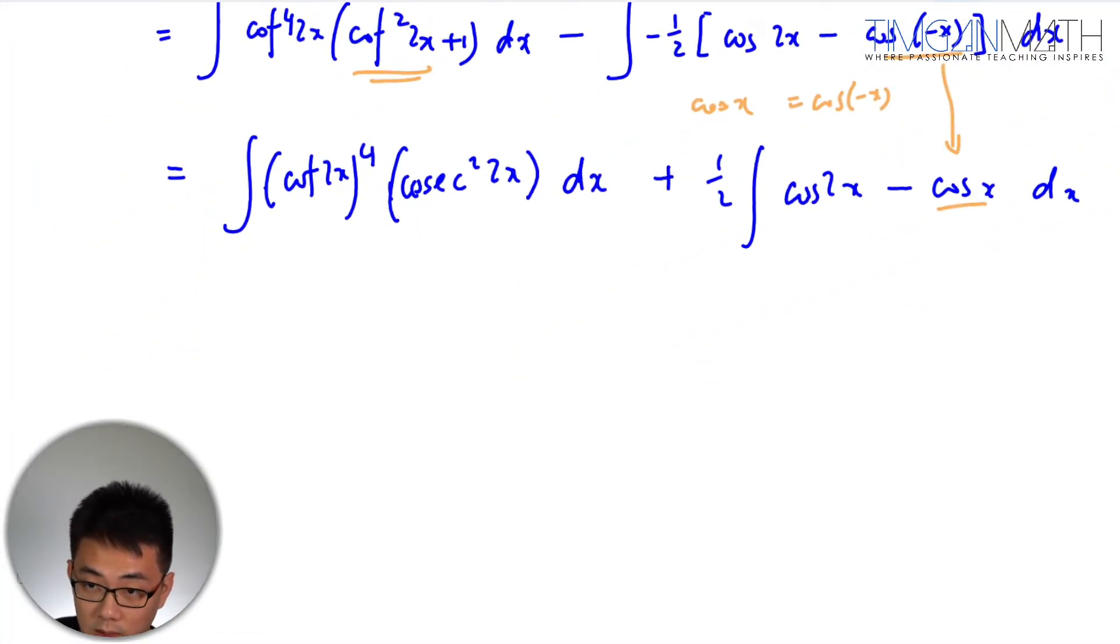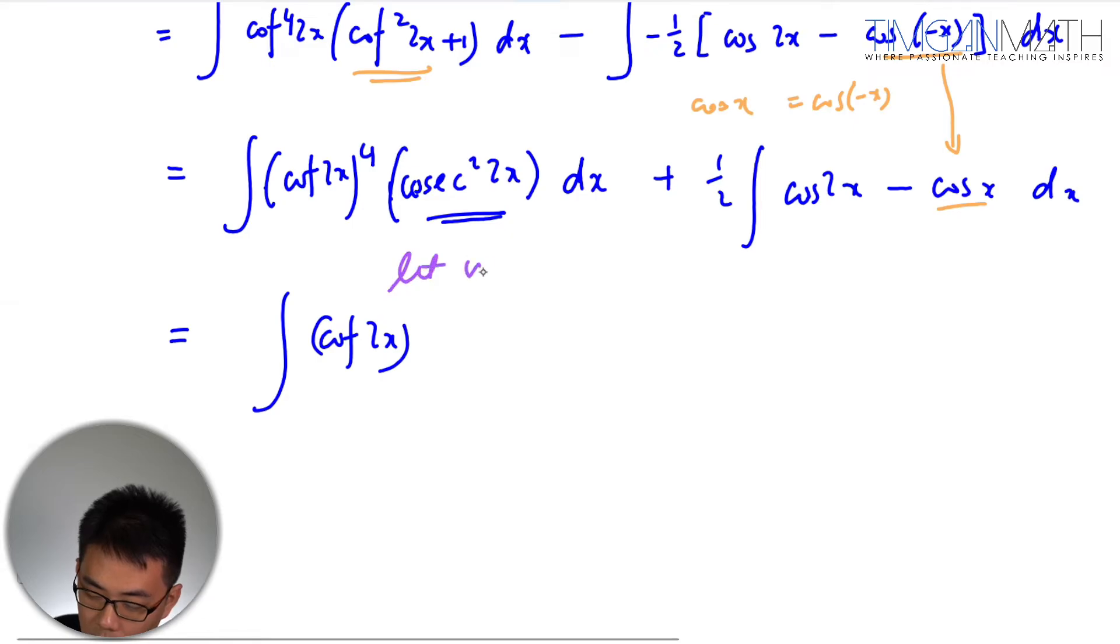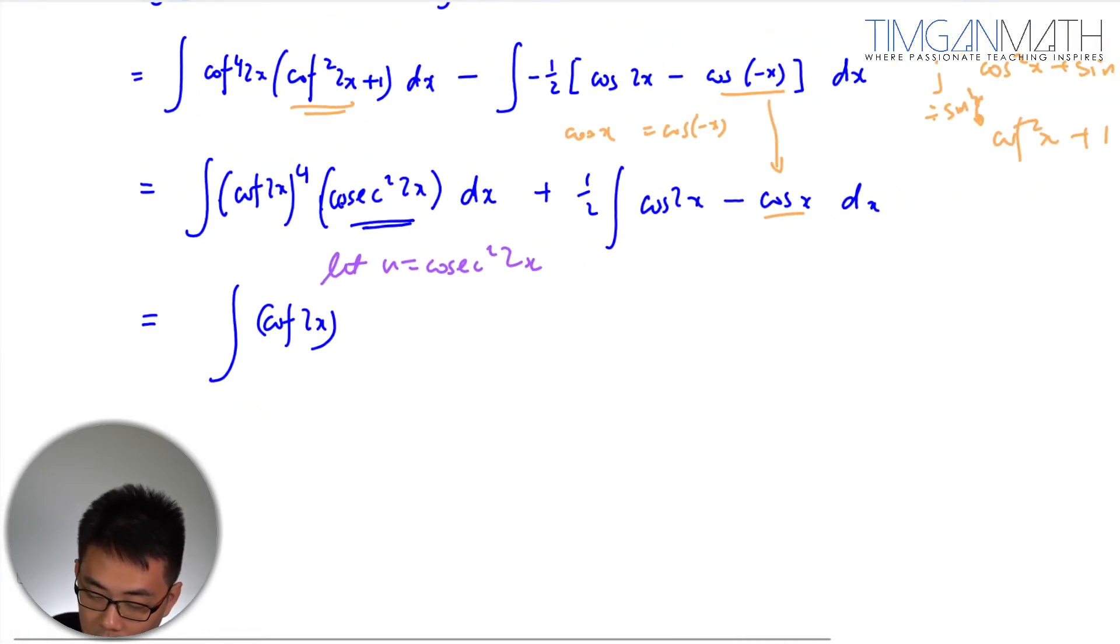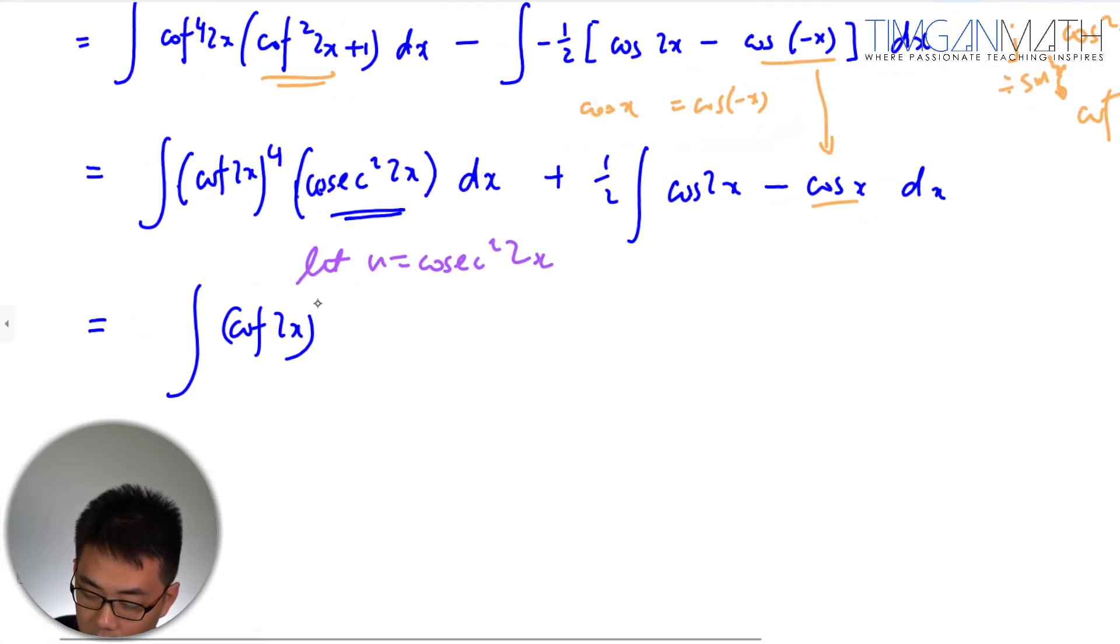So I just changed it over here negative x equals to cosine x. Okay so then we can just start integrating. So integrating this wouldn't be a problem. This will just be our u, so this is cot.